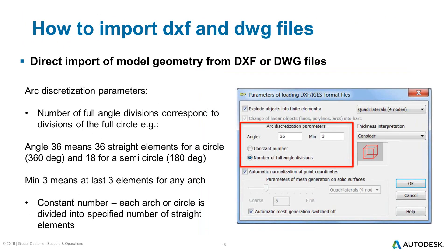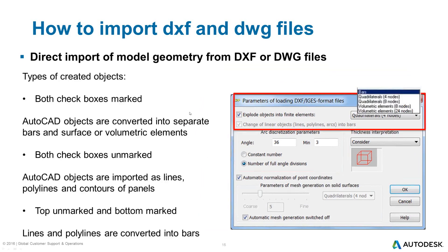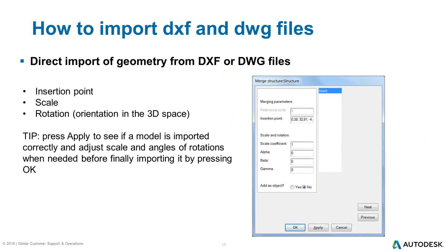During opening a DWG or DXF file, you can decide on the accuracy of shapes of arcs and circles. This dialogue also allows you to decide what types of objects should be created in Robot — whether you want bar elements, surface elements, or volumetric elements. The next window allows you to specify the insertion point, modify the scale coefficient to increase or decrease the dimensions of the model, and finally set the model orientation in three-dimensional space by rotating it about the global coordinate system axis.